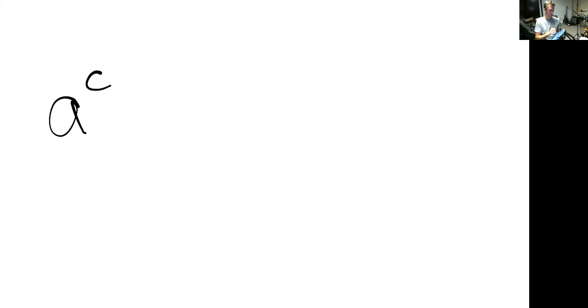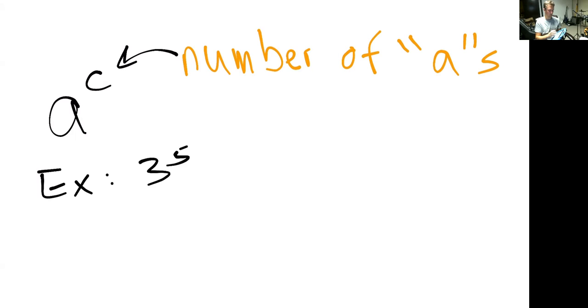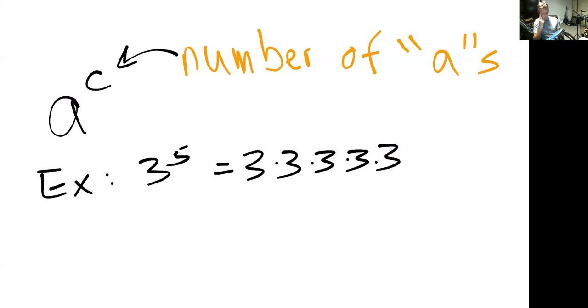Getting back to exponentials — exponentials are some number a raised to some power c. This c is essentially the number of a's that are multiplied together. So if I take a number like three to the fifth, I have five threes multiplied together, and that results in some ultimate computational value. This exponent tells you how many of the bases are multiplied together.